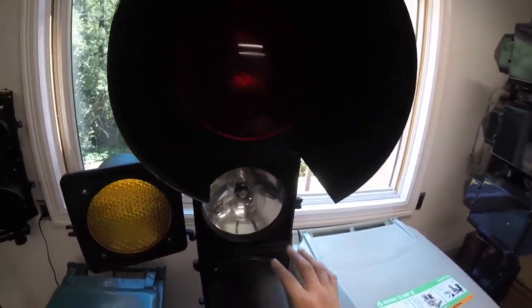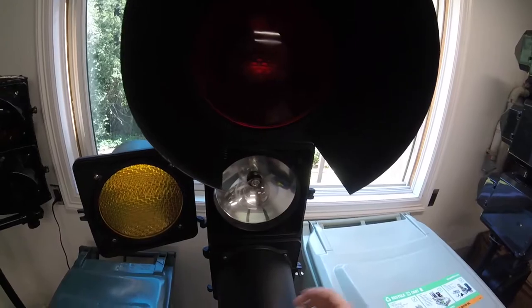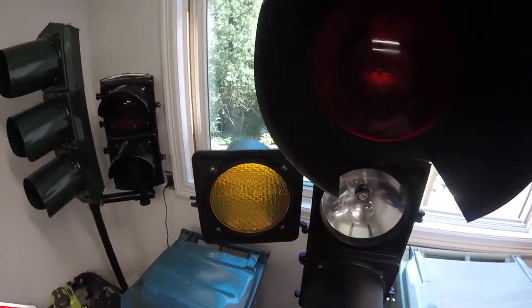Basically what happens is this lamp comes on and it fills this reflector with light that is then passed through the lens and you get the colored indication.